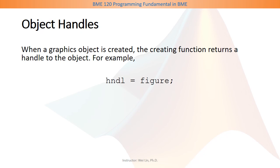When a graphics object is created, the creating function returns a handle to the object. For example, when we use the figure function, it creates a figure window on the screen and returns the handle to that figure window. Similarly, when we use the plot function, it draws a line on an axis and outputs the handle to that line.